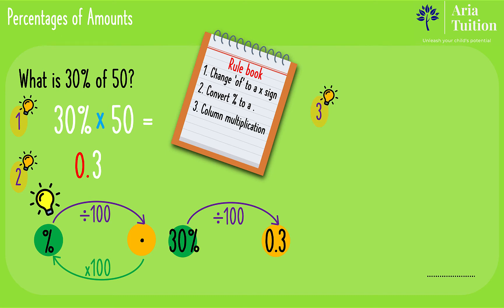Rule number three is to carry out column multiplication of 0.3 times 50. As the method suggests, the numbers are placed under one another in a column and the line is scored below, and we start from the right hand side.